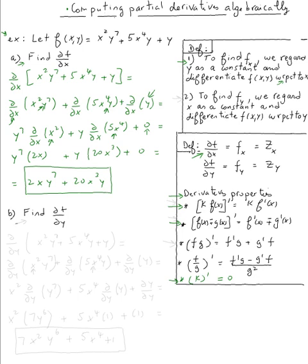Now let's find the partial of f with respect to y. The partial with respect to y of x²y⁷ + 5x⁴y + y. By the definition, to find the partial with respect to y, we regard x as a constant and differentiate with respect to y. Applying the sum rule, this becomes the partial with respect to y of x²y⁷, plus the partial with respect to y of 5x⁴y, plus the partial with respect to y of y.